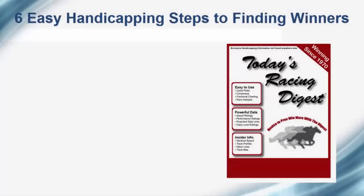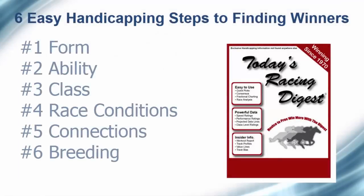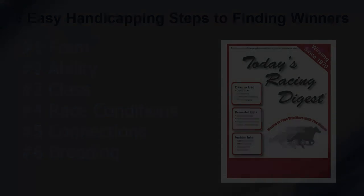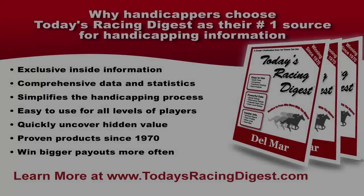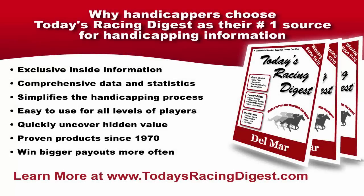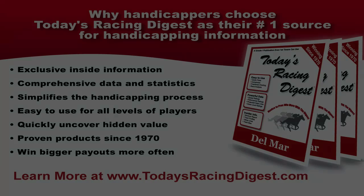After completing these six steps, you should have eliminated the pretenders and whittled down the field to the contenders. That's it for this video. Hopefully you found it helpful and learned a little something. Of course, any time you have any questions, feel free to email us or give us a phone call. Our contact information can be found on our website at todaysracingdigest.com. We'll see you next time. Bye.